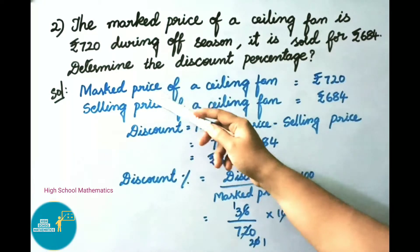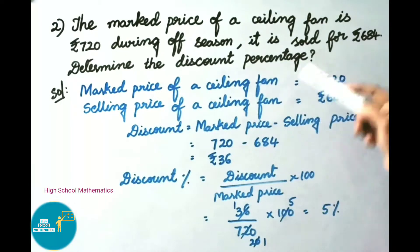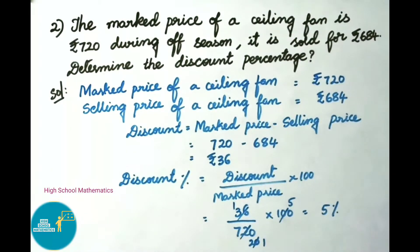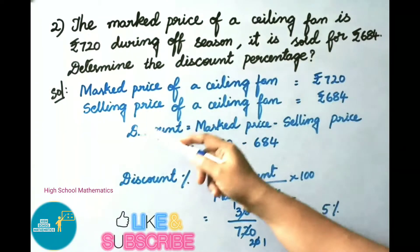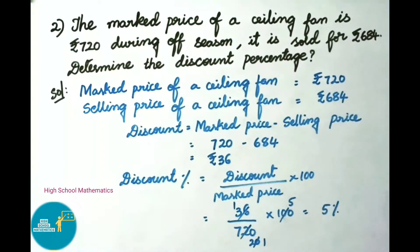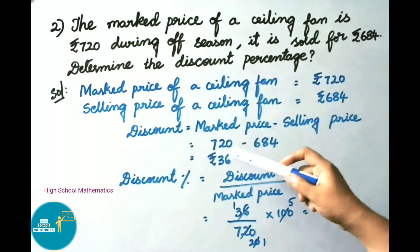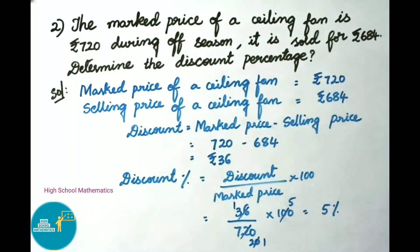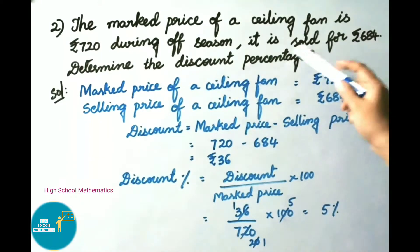Let us see the solution. Given: market price of a ceiling fan is 720 rupees and selling price of a ceiling fan is 684 rupees. Discount equals market price minus selling price, that is 720 minus 684, which equals 36 rupees. Therefore, discount on ceiling fan is 36 rupees.